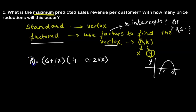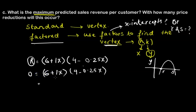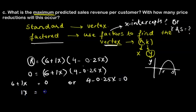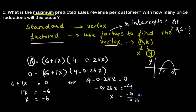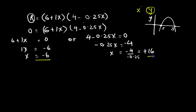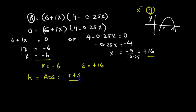Setting revenue to zero, either factor equals zero: 6 plus x equals zero gives x equals negative 6, and 4 minus 0.25x equals zero gives x equals 16. So r equals negative 6 and s equals positive 16. To find the vertex, we first find h, the axis of symmetry, which is the average of r and s: negative 6 plus 16 divided by 2 equals 5.